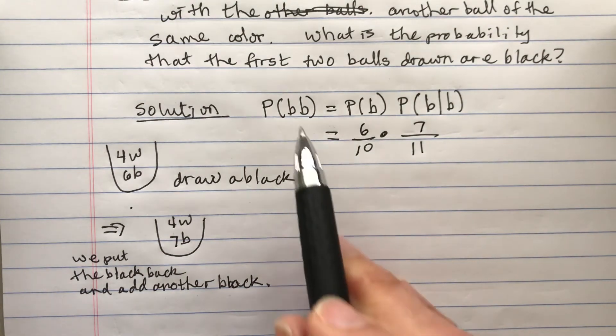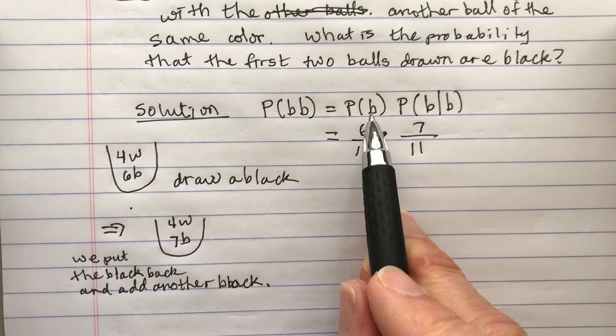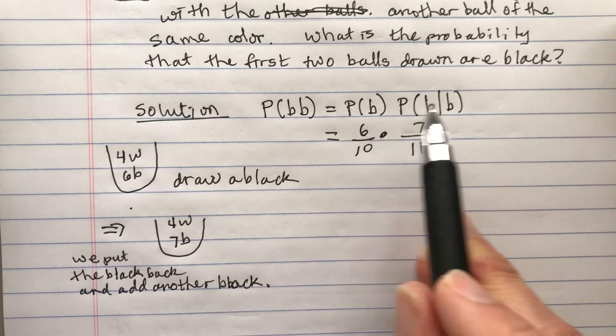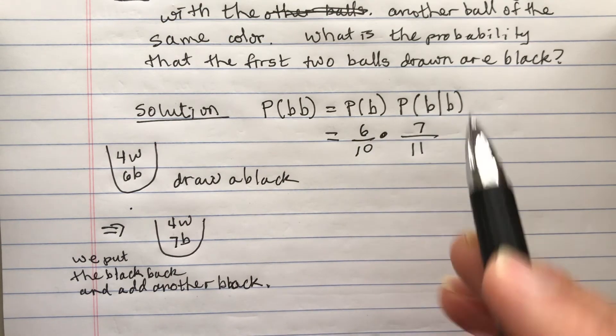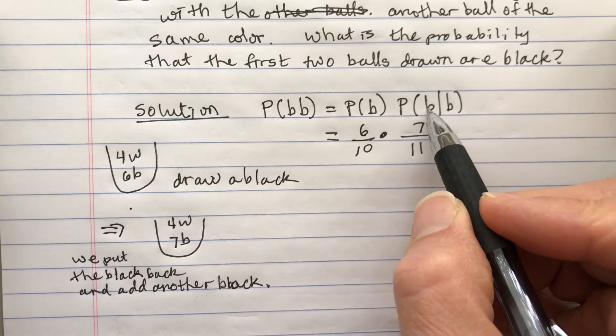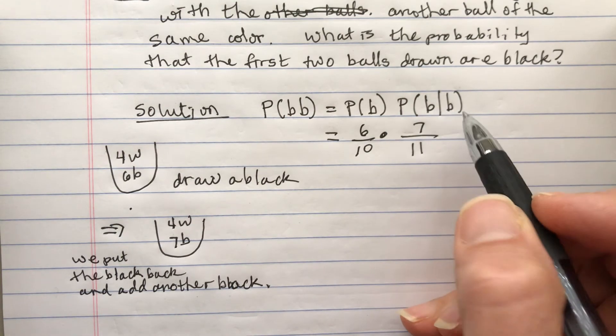So the probability of two things happening is equal to the probability of the first thing happening times the probability that the second thing happens. This bar means it's the probability black given that the first time I got a black.